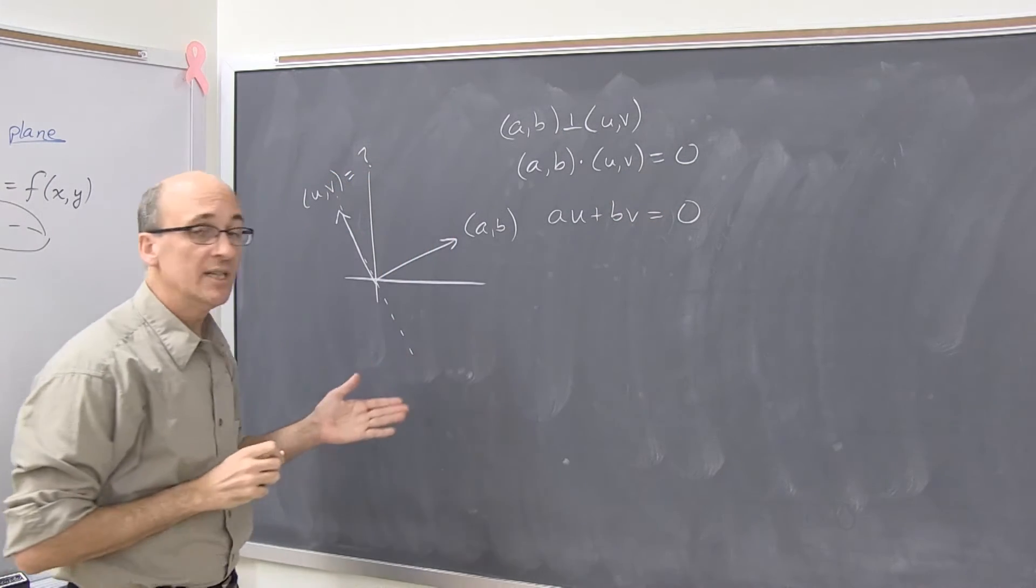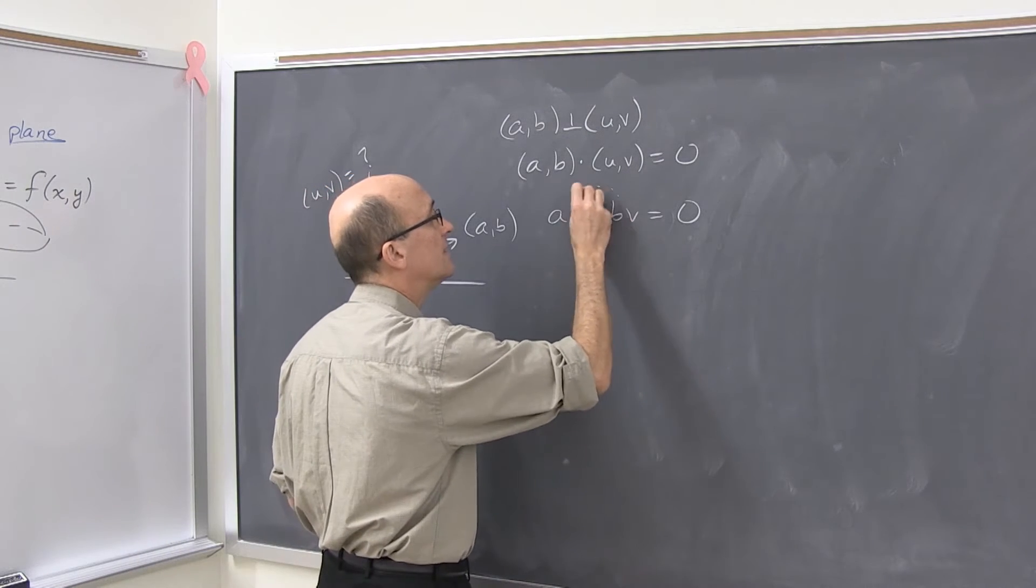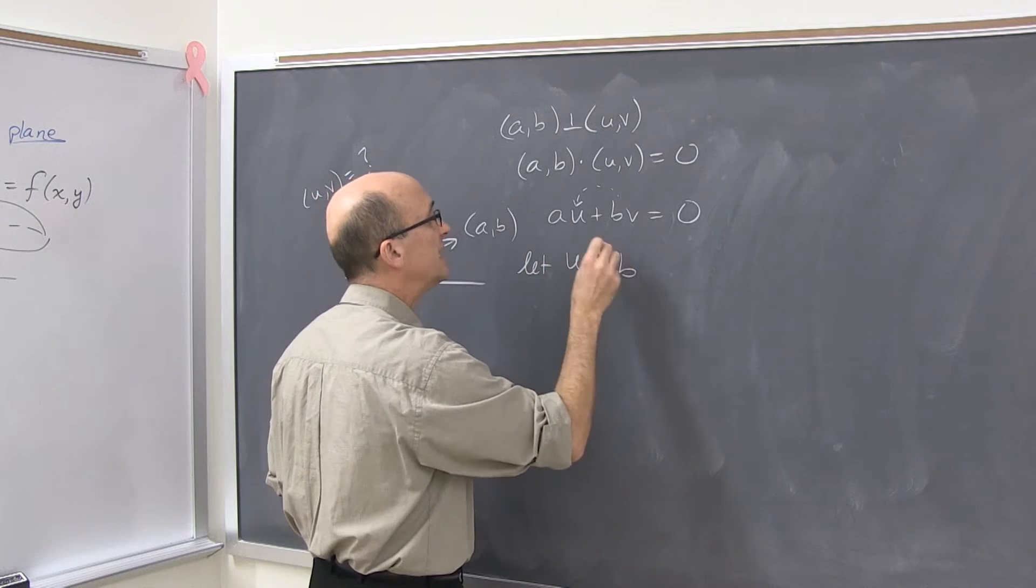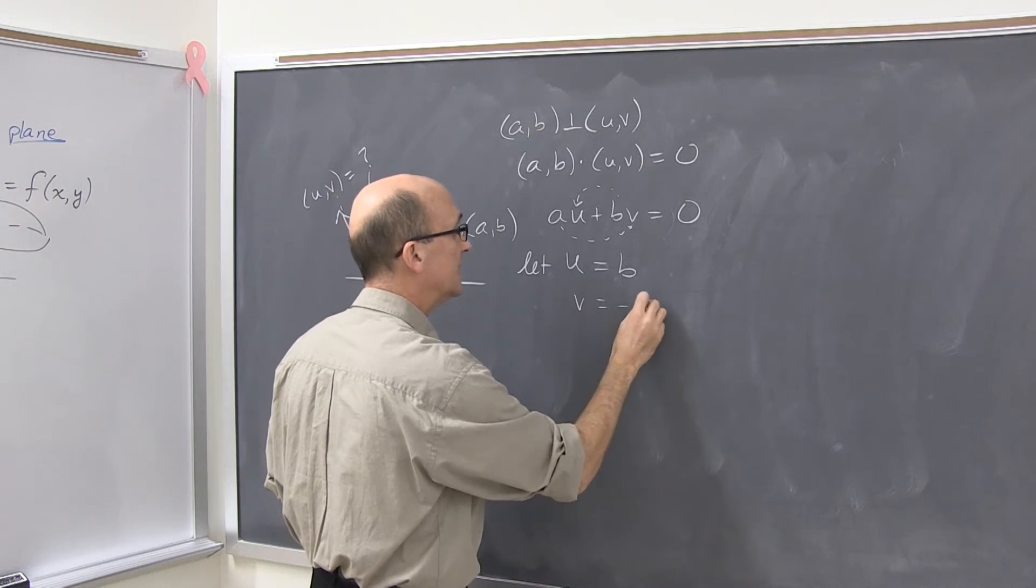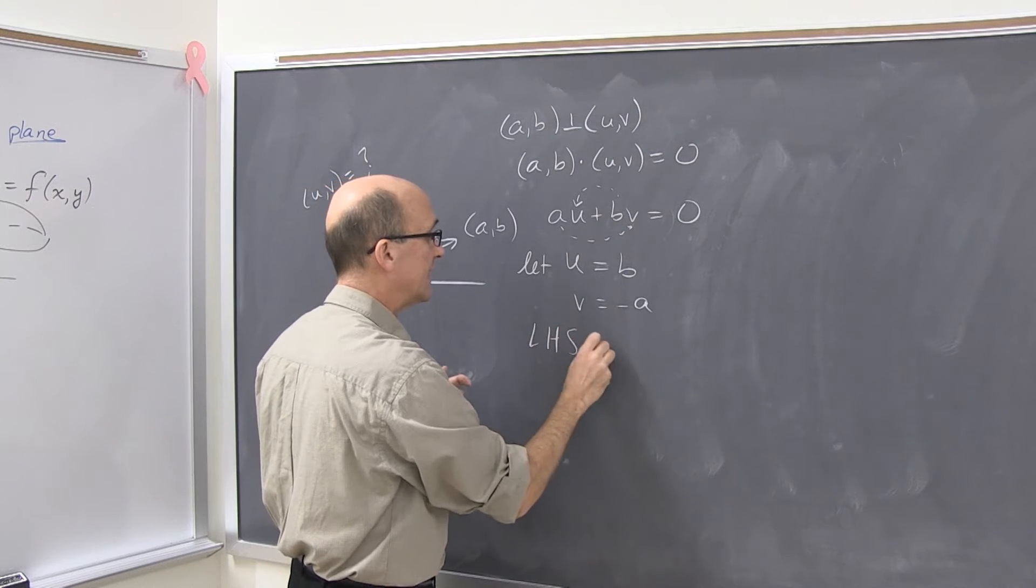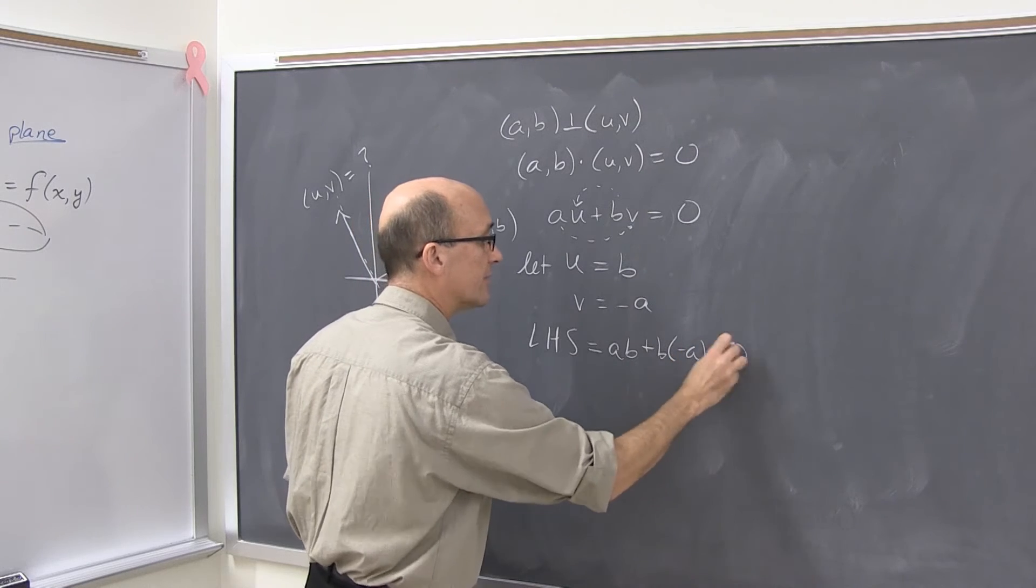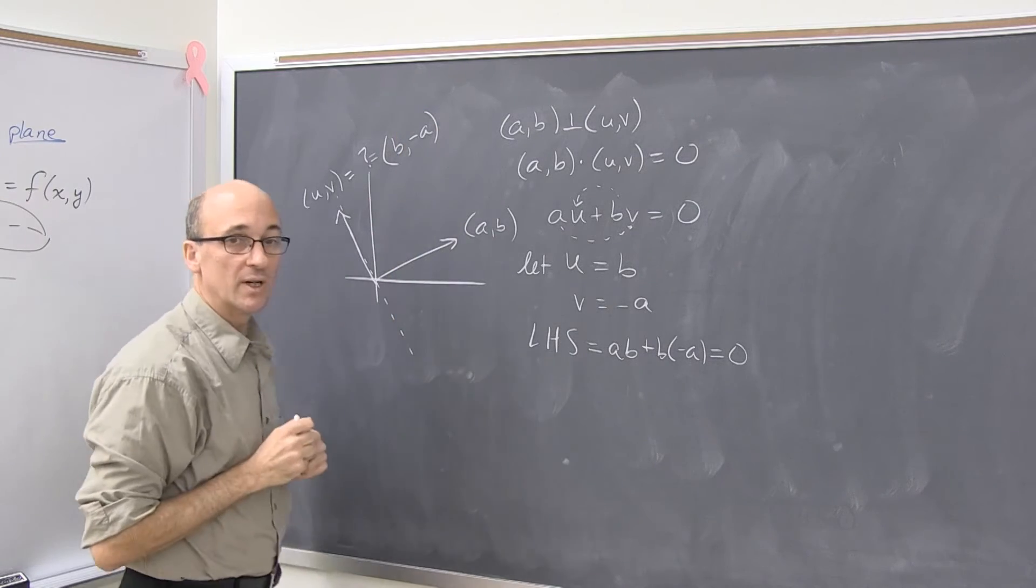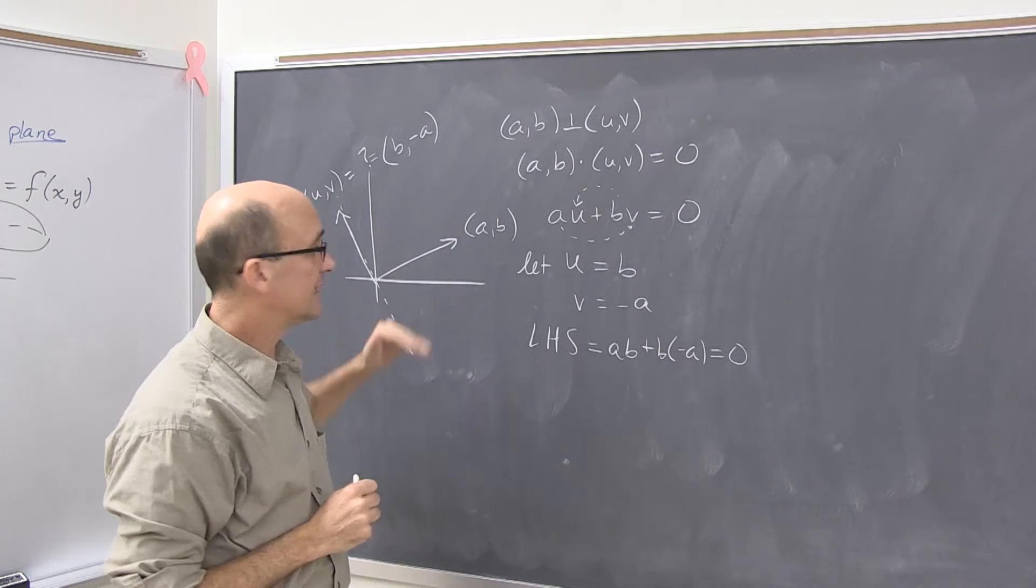There are many solutions, but there's a particularly simple or convenient one. Let's just put b over here. Let u be b, and then over here I'll just put something which will cancel. I'll make v be negative a, and then the left-hand side works out. We get a times b, plus b times minus a, we get zero. So there's a solution: (b, -a) will work. Gives us a normal or perpendicular direction to the given vector.